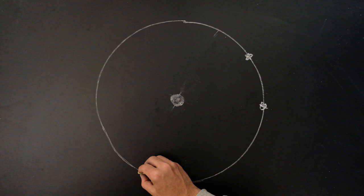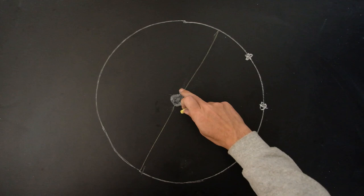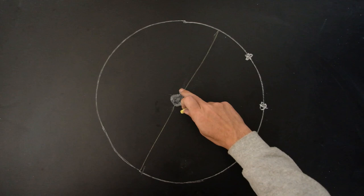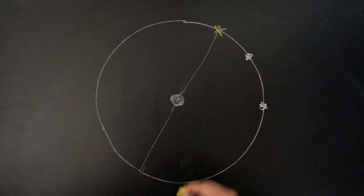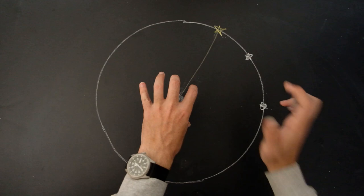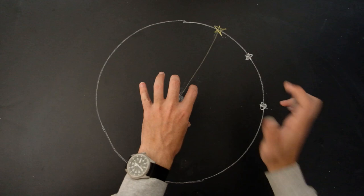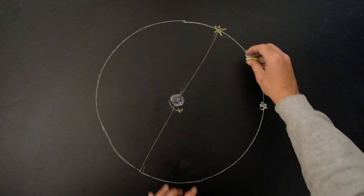Now let's add the rotation axis — north and south. For the north pole we have Polaris and other stars. Earth rotates around this axis, but in this picture, because Earth is fixed at the center, it looks like the stars are rotating around the axis instead.